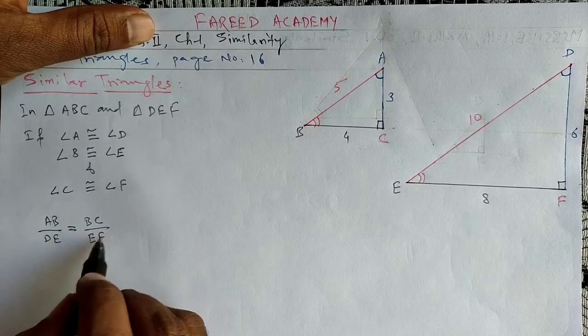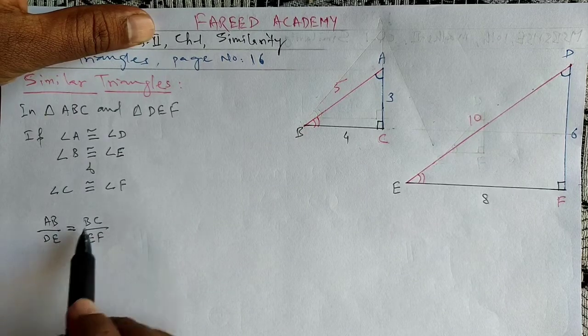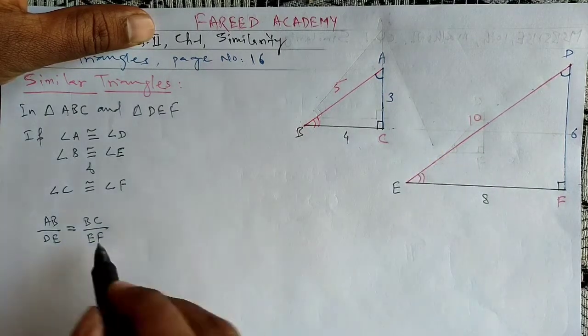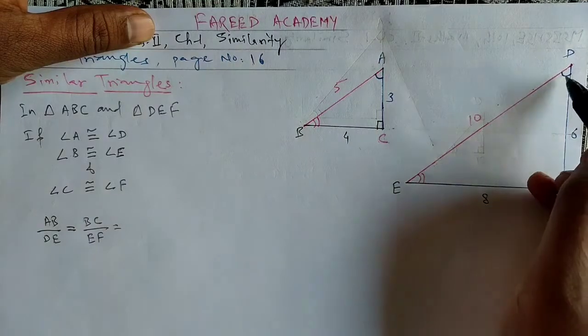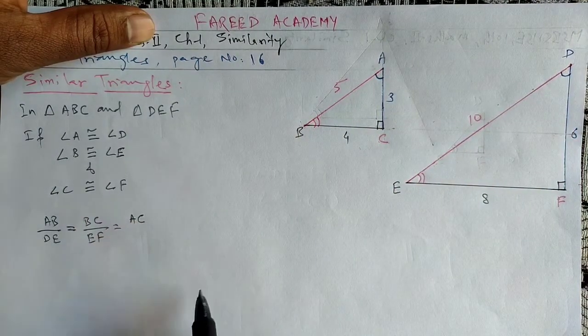AB by DE should be equal to BC by EF, and BC by EF should be equal to AC by DF.